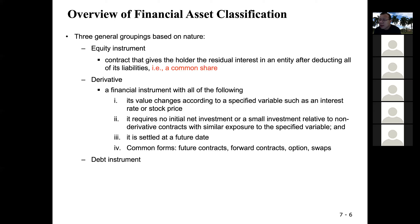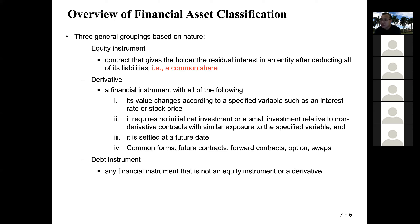The instructor asks how much students learned about derivatives in finance. A student confirms they learned about call options and put options. Those are all derivatives. Debt instruments — if it's not an equity instrument and not a derivative, then it's a debt instrument; a bond is the typical example. So those are the three general groupings based on nature: equity, debt, and derivatives.